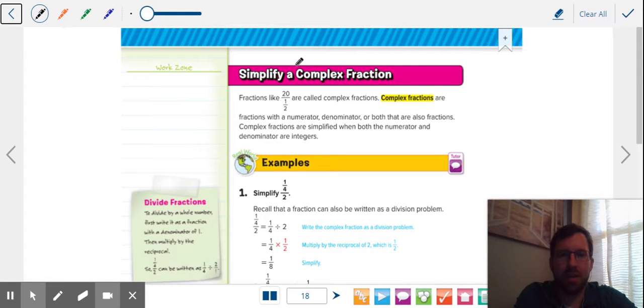Today we're talking about complex fractions. So what's a complex fraction? When you have two or more fractions inside of a fraction. So in this case, you have 20 over one half. Normally we don't have fractions inside of fractions, but it's okay. Because remember, all fractions are division problems. So what we can do is take that fraction and make it into a division problem.